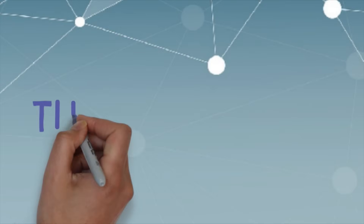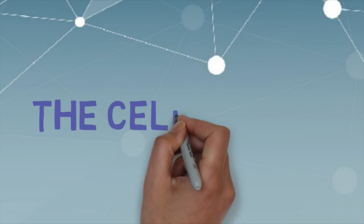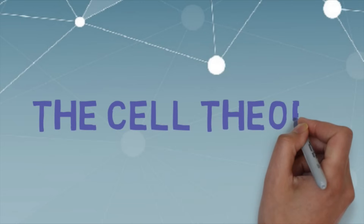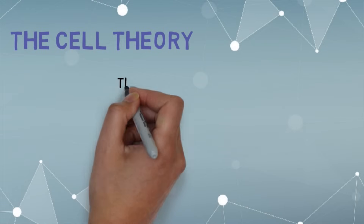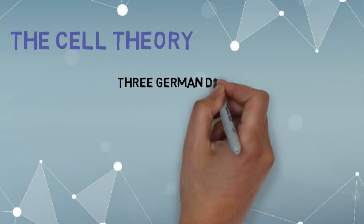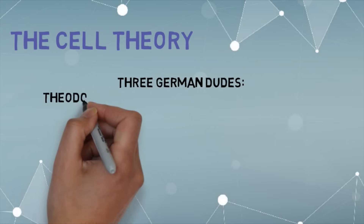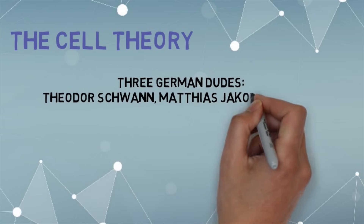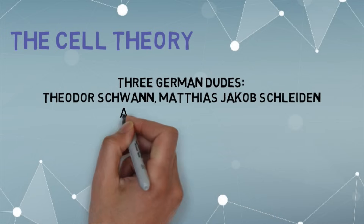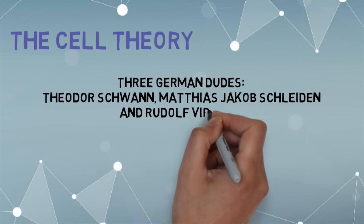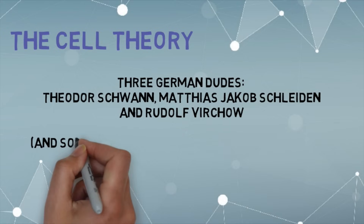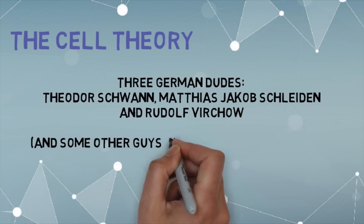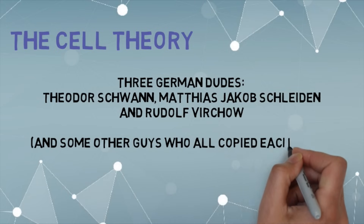Scientists at the time were recognizing that cells existed, but the theory about what these cells represented in terms of life was just beginning to surface. So finally, in the mid-1800s, three German men by the names of Theodor Schwann, Matthias Jacob Schleiden, and Rudolf Virchow were able to come together with a large enough body of work and put together a concept known as the cell theory. They are the ones credited for the cell theory, building upon the work of previous scientists like Hooke and Leeuwenhoek.